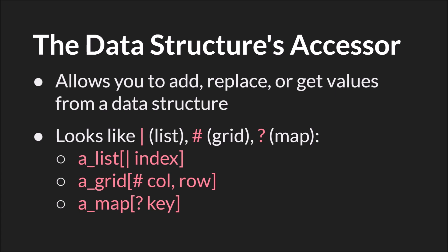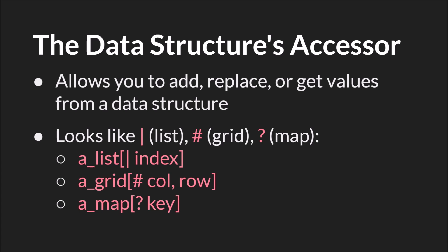There are three data structures that allow you to use an accessor: the list, the grid, and the map. The accessor allows you to add, replace, or get values from that data structure. The list accessor is the pipe symbol. The grid accessor is the hashtag or pound sign. The map accessor is the question mark. For a list, you use the pipe and then the index — much like for an array how you use the at sign and then the index. For a grid, you use the hashtag and then the column and the row. For a map, you use a question mark and then the key. We'll go over each data structure and its accessor in depth in the individual tutorials.